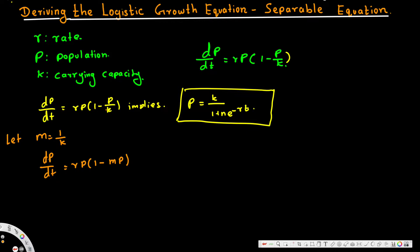We have dp and dt, so we need to see whether we can separate the p terms on one side and the dt terms on the other. We don't have any other t terms except dt, so it's easy to do the separation. Bringing all p terms to one side, we get dp over [p(1 minus mp)] is equal to r·dt.